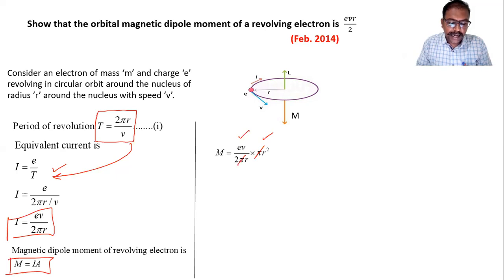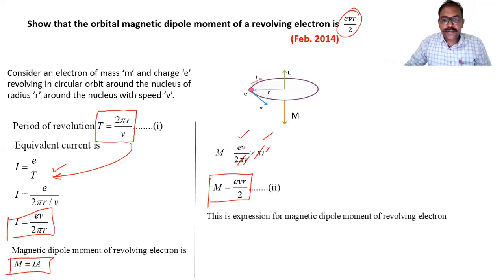Then we can cancel the common term. This pi, pi get cancel, R and 1 R from R square get cancel. And we get here a formula M is equal to E V R by 2. And this formula only we have to prove here. So this is the expression for magnetic dipole moment of revolving electron.